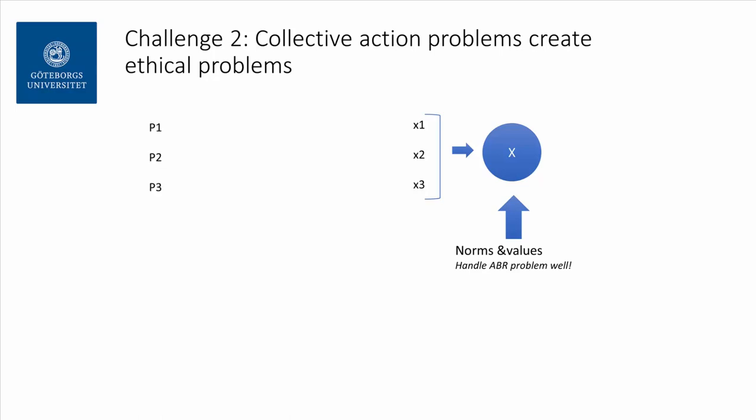We have these three people here that are supposed to do. So P1, P2, P3 are supposed to do X1, X2, X3. Everything set for success. And they agree on the norms and values. They agree that this is really desirable to have done.